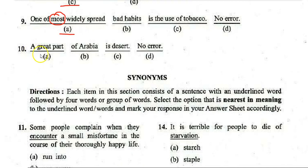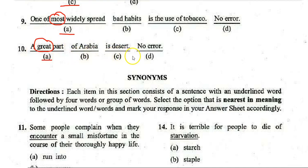Last error question: 'The great part of Arabia is desert.' The error is in section A — 'great' should be replaced with 'large.' The correct sentence is: 'A large part of Arabia is desert.'